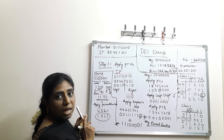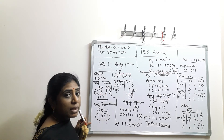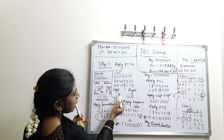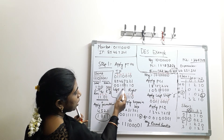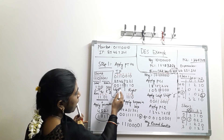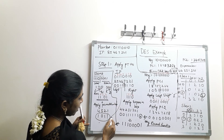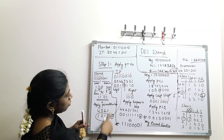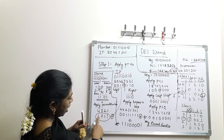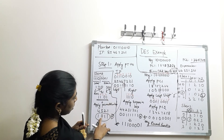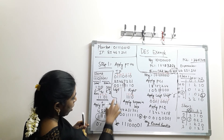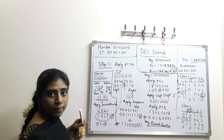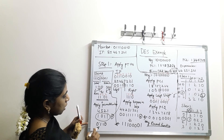The permutation box output is XORed with the left half bits from the initial permutation. The left half of the initial permutation output is XORed with these values. Applying XOR: 0, 1, 0, 0, 1, 1, 1, 0, 1, 0. The resulting output is 0, 1, 1, 0.